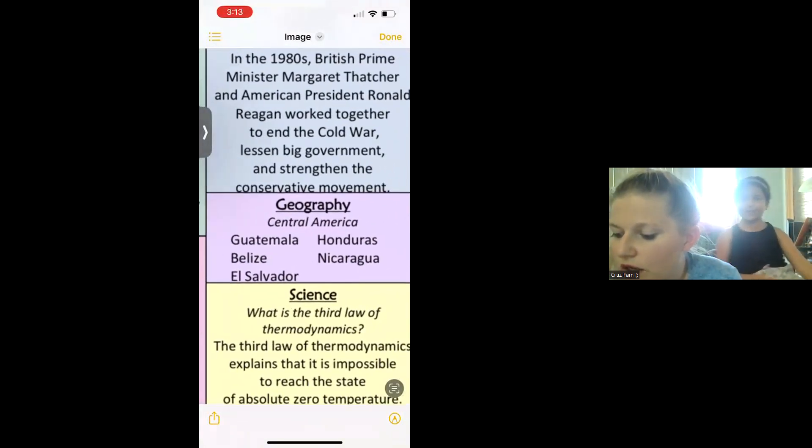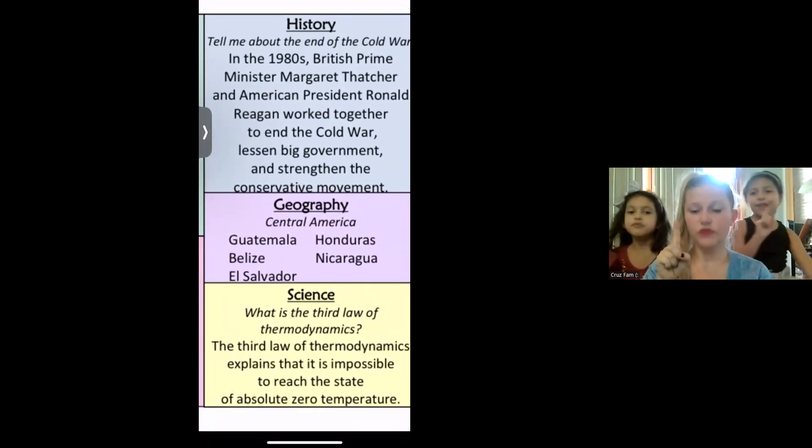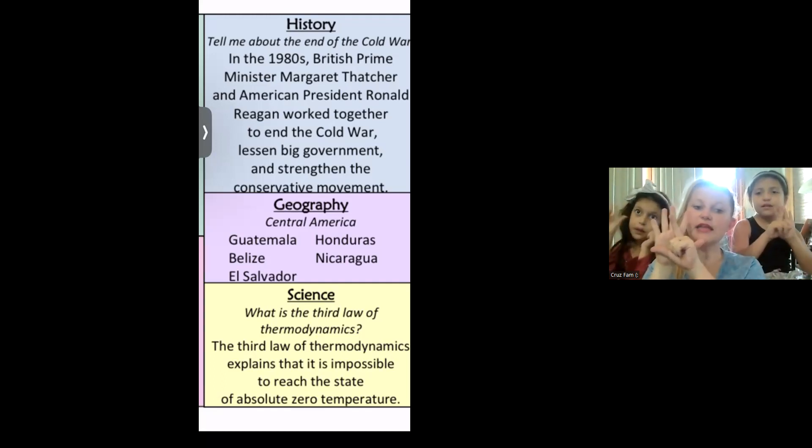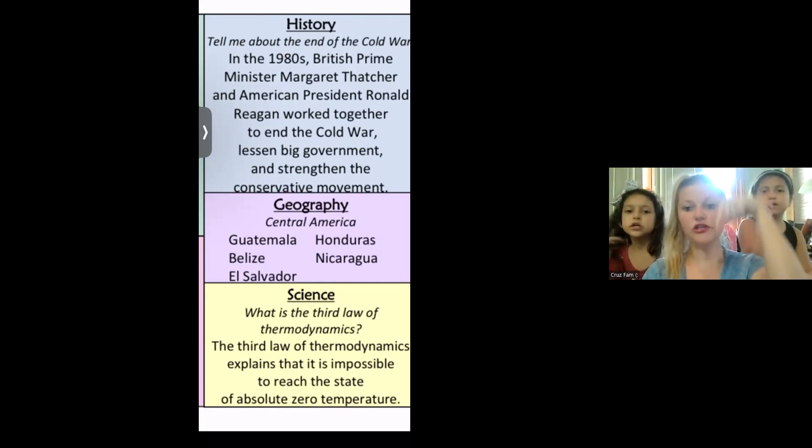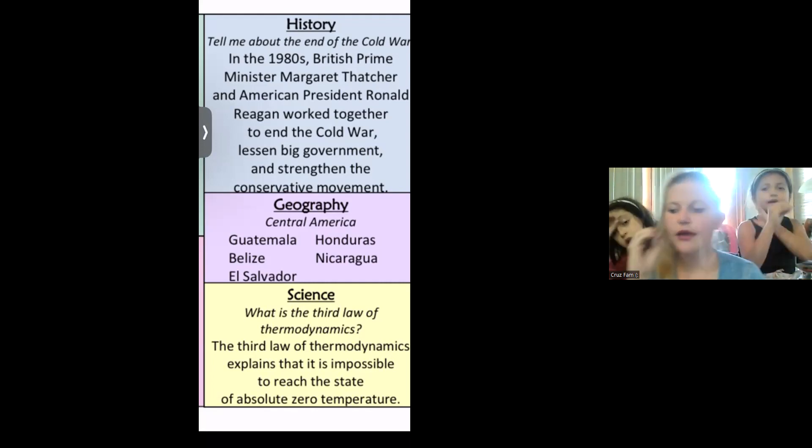Science. What are all of the laws of thermodynamics? First law of thermodynamics: energy cannot be created or destroyed. Second law of thermodynamics, often called the law of entropy. The second law explains why heat flows from an area of higher temperature to an area of lower temperature. Third law of thermodynamics explains that it's impossible to reach a state of absolute zero temperature.